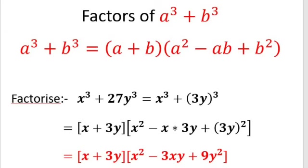Now a² means x². Minus ab — a is x and b is 3y — so x × 3y = 3xy. Plus b²: 3y whole square means 3y × 3y = 9y². So the factors of x³ + 27y³ are (x + 3y)(x² - 3xy + 9y²).